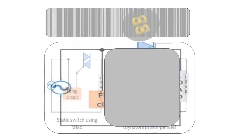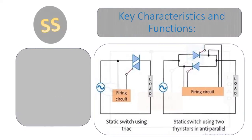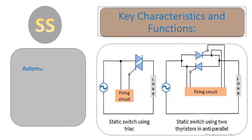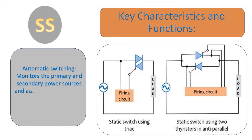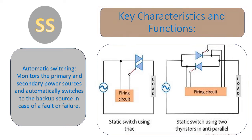Key Characteristics and Functions: Automatic Switching — monitors the primary and secondary power sources and automatically switches to the backup source in case of a fault or failure.